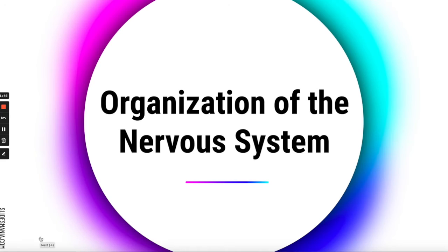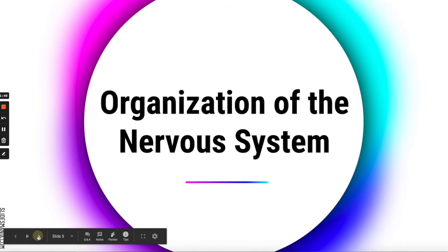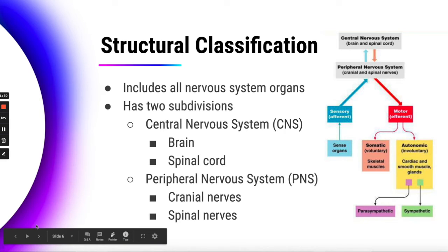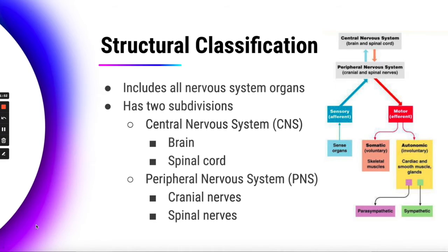If we look at how the nervous system is organized, there are structural classifications we'll start with. Any organ in this system would be classified based upon its structure. The nervous system has two subdivisions: the central nervous system and the peripheral nervous system. The central nervous system, or CNS, includes the brain and the spinal cord.